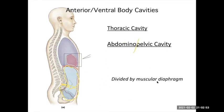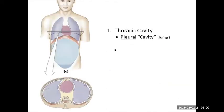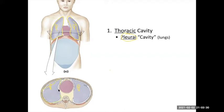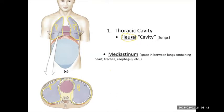Within your thoracic cavity there are further subdivisions. You have two pleural cavities — one for each lung — housing the left and right lungs. Think of these cavities as little sacs that hold the lungs. There are two of them because you have a left and a right lung. 'Pleural' — you can think of 'plural' meaning two — that's an easy way to remember the name.